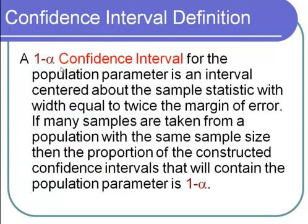A 1 minus alpha confidence interval, such as a 95% confidence interval, for the population parameter is an interval centered about the sample statistic — such as the sample mean — with width equal to twice the margin of error. If many samples are taken from a population with the same sample size, then the proportion of the constructed confidence intervals that will contain the population parameter is 1 minus alpha.